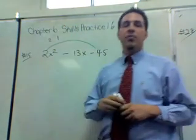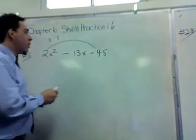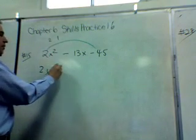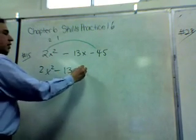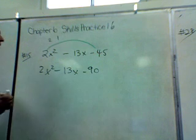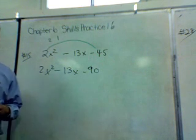And we get, if you write it out, we're going to get negative 90. So we rewrite it, 2x² - 13x - 90. That's our first step.